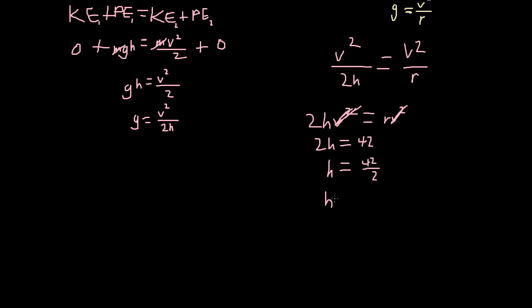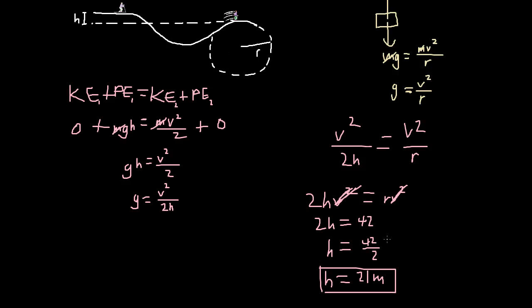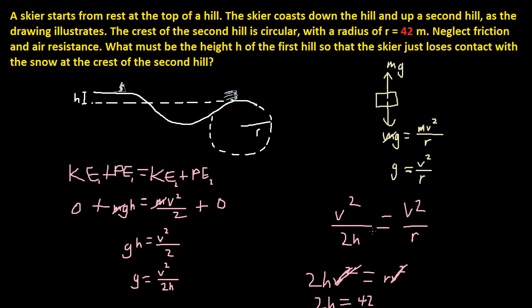So 42 divided by 2. So h is 21 meters. And that is how you get the answer for this question. So basically it turns out that you just divide the radius by 2. Let's go ahead and see. Thank you.